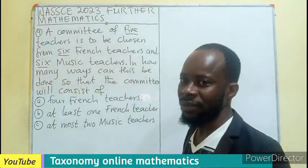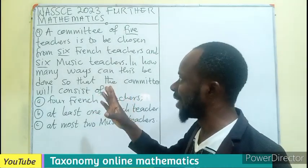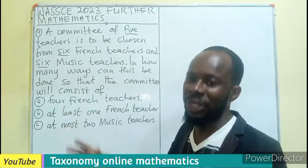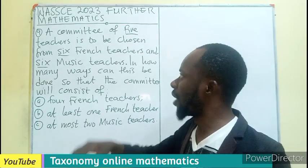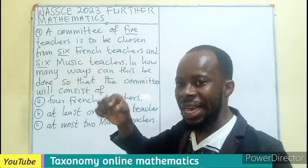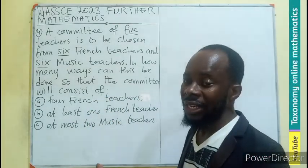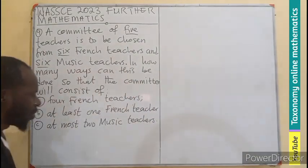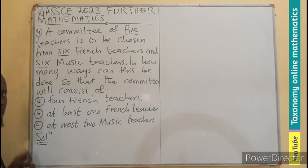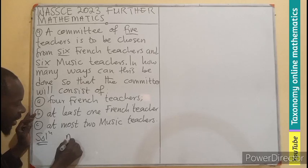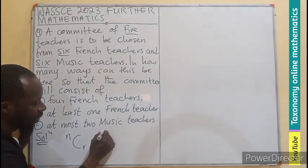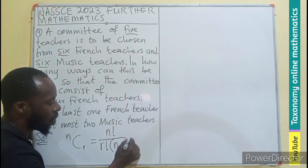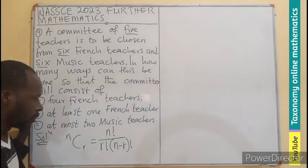This is an arrangement of teachers whereby the order does not matter — whether the French teachers come first before the music teachers. In how many ways are you going to arrange it? Picking a certain number at a time is a combination. The combination formula is: N combination R = N factorial divided by R factorial times (N minus R) factorial.